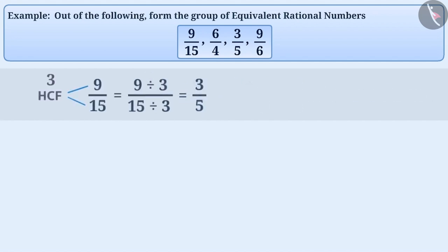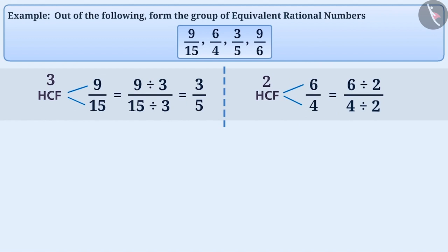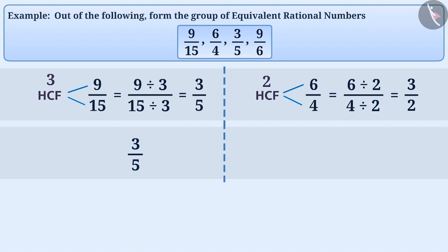Similarly, if we divide the numerator 6 and the denominator 4 of 6 by 4 by their HCF 2, then we get the simplest form of 6 by 4, that is 3 by 2. There is no common factor except 1 in the numerator and denominator of 3 by 5. Therefore, its HCF is 1.